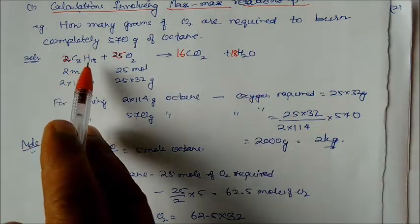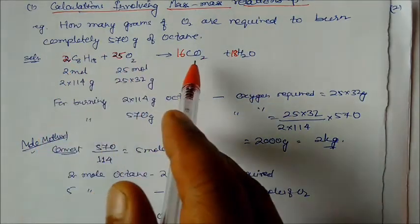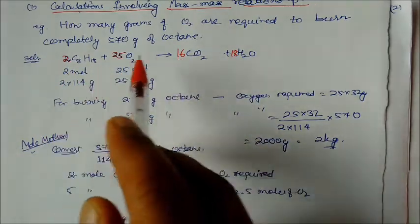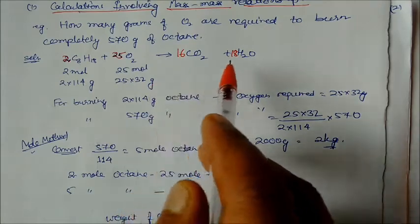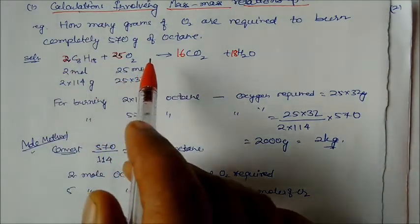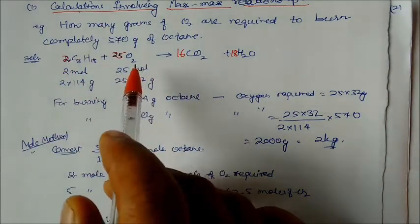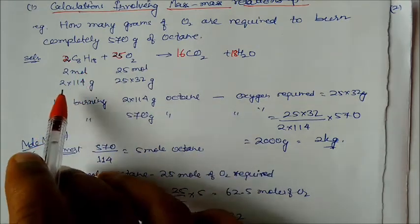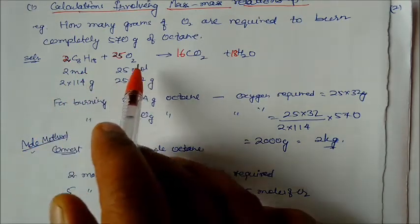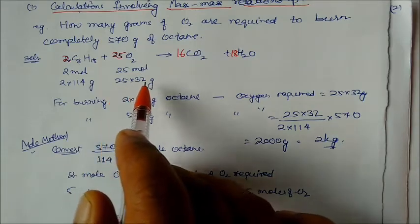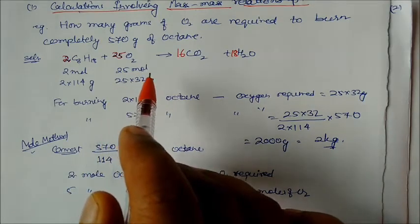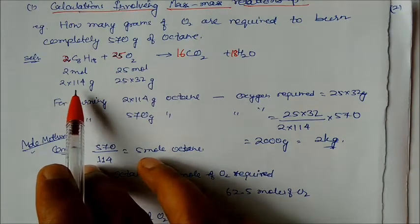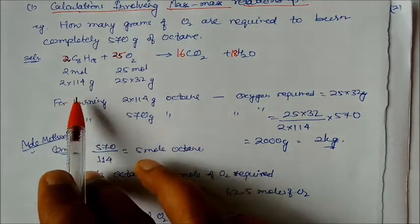Octane reacts with oxygen to give CO₂ and water. Balancing the equation: 2 moles of octane require 25 moles of oxygen. In terms of grams, octane is 2 × 114 grams and oxygen required is 25 × 32 grams. The mass of octane is 2 × 114 = 228 grams.